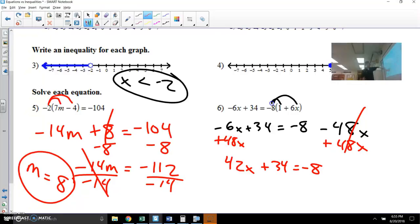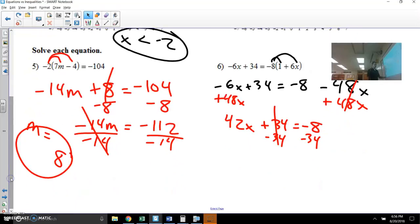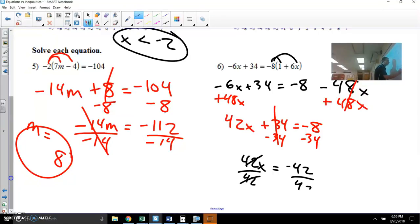And similarly to the other problem next to it, let's put together like terms, 34 and negative 8. And so that gives you 42x still on the left, but now these two, since they're both negative, one is negative 8 and you're subtracting 34. It feels like adding, but it keeps the sign negative. Let's go ahead and finish out by dividing 42 to the other side and you get negative 1.